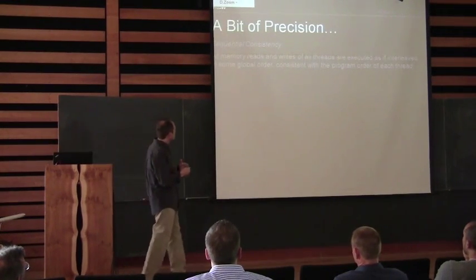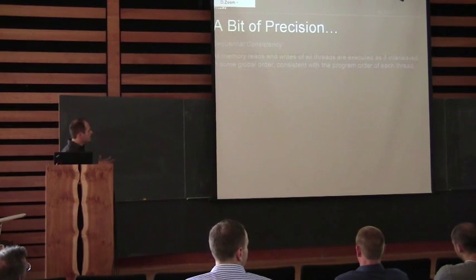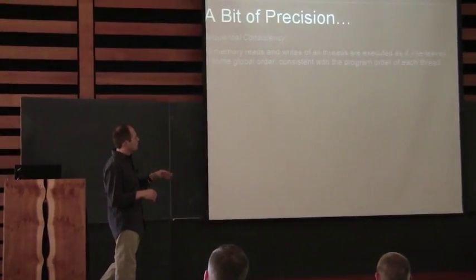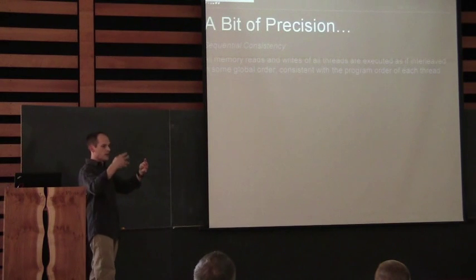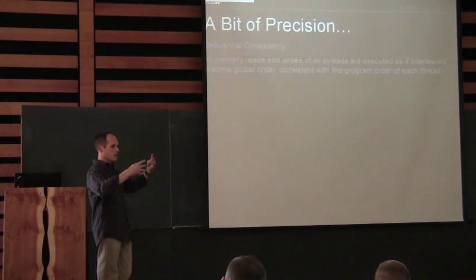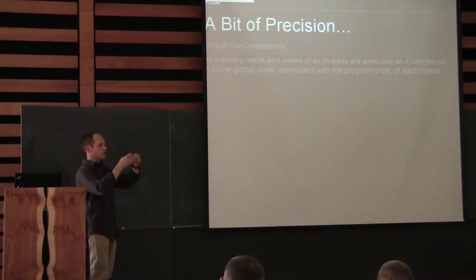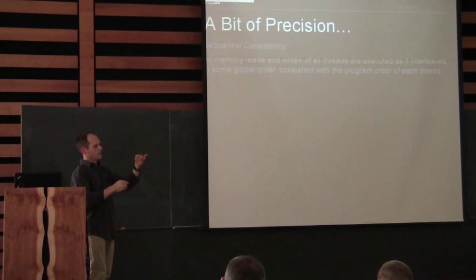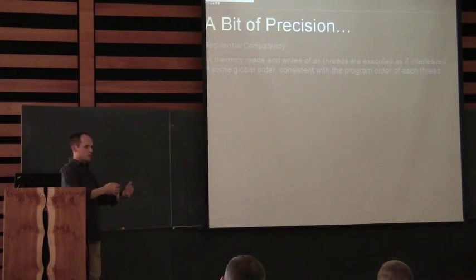So what is sequential consistency? Sequential consistency is — to be more precise — all memory reads and writes of all threads executed as if interleaved into some global order consistent with the program order of each thread. That means you've got this thread doing its instructions and this thread doing its instructions, independently running. They could mix in any way, but each thread always goes in order, and you don't know how they're interleaved. That is sequential consistency.